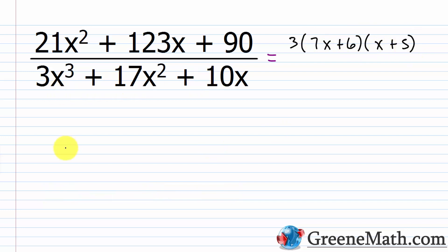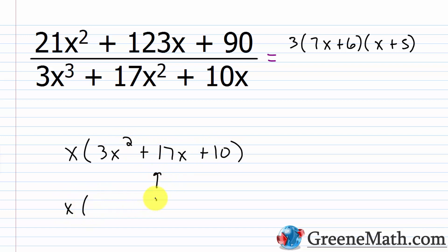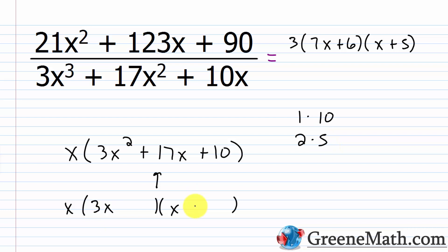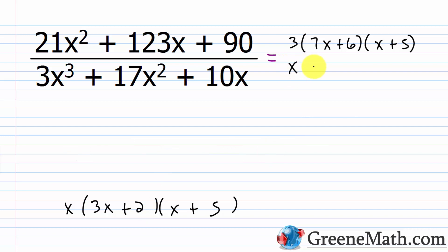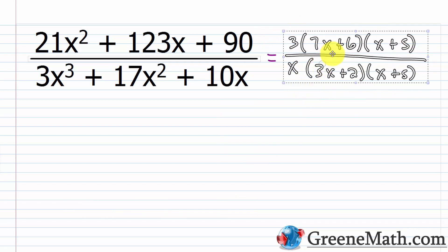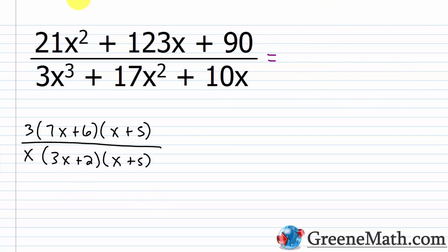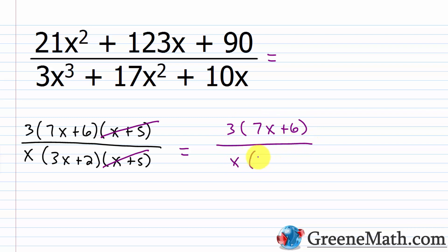For the denominator, I pull out an x to get x(3x² + 17x + 10). Since 3 is prime, I use reverse FOIL: (3x)(x). For factors of 10: 1×10 or 2×5. To get 17: 3 times 5 = 15, and 2 times 1 = 2; 15 + 2 = 17. So the denominator factors as x(3x + 2)(x + 5). Canceling the common factor (x + 5) from numerator and denominator, I'm left with 3(7x + 6) over x(3x + 2).